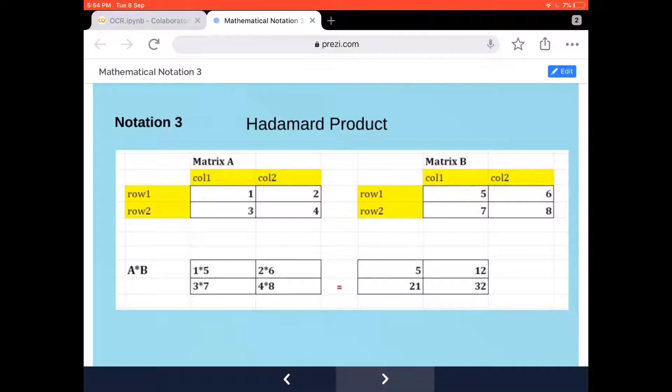Matrix A has four elements: 1, 2, 3, and 4. Matrix B also has four elements: 5, 6, 7, and 8. All these numbers belong to real number space. What is Hadamard product? The first element in column 1 row 1 is 1, and in matrix B it is 5, so we multiply 1 and 5. Similarly, we multiply 2 and 6, then 3 and 7, then 4 and 8. The corresponding elements are multiplied together.